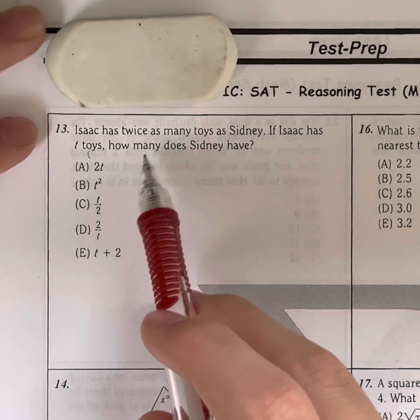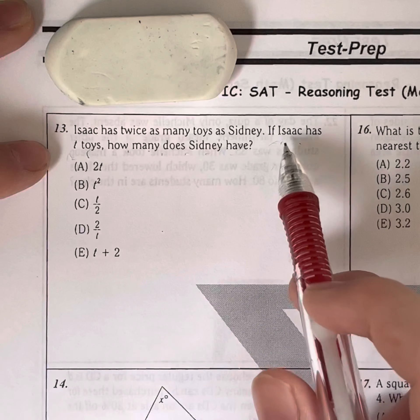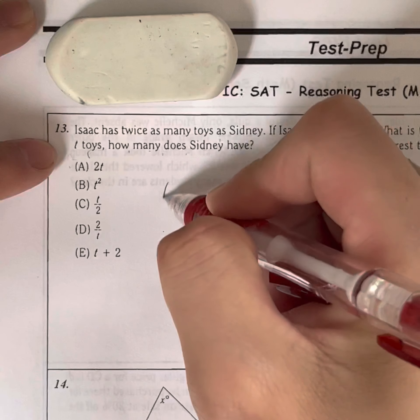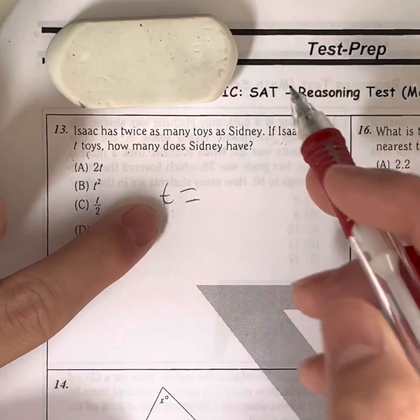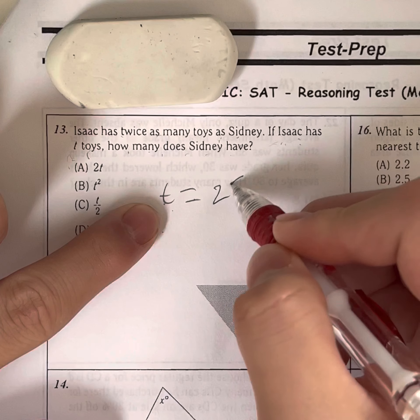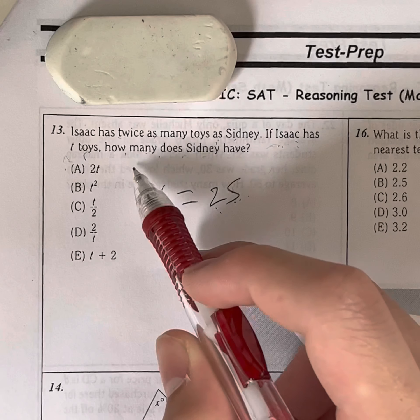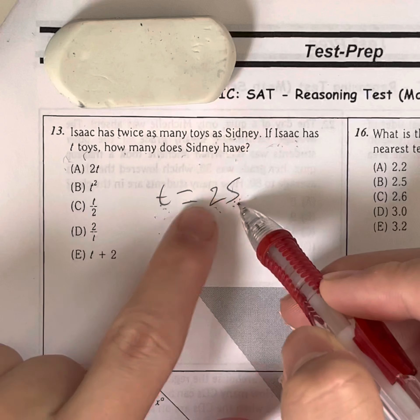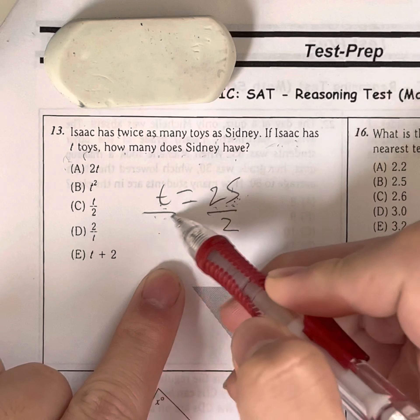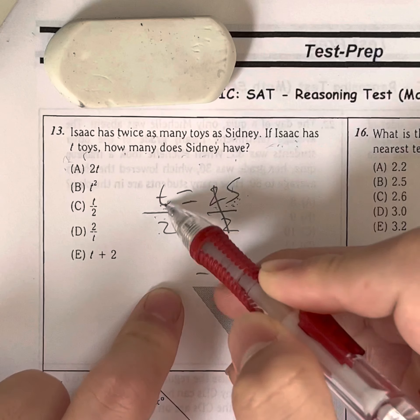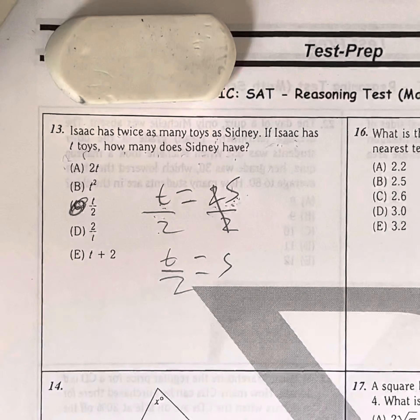All right, question 13. Isaac has twice as many toys as Sydney. If Isaac has T toys, how many does Sydney have? So Isaac has T toys. He has twice as many as Sydney, so T is equal to 2 times Sidney's toys. So that means he has twice as much as Sydney. Well, how many toys does Sydney have? That means we have to isolate S. To get that, we just divide both sides by 2, giving us S is equal to T over 2. So Sydney has T over 2 toys, meaning your answer has to be B.